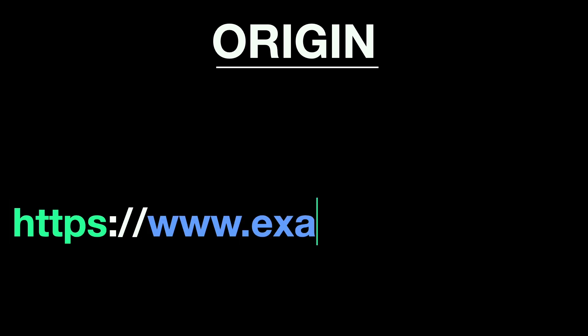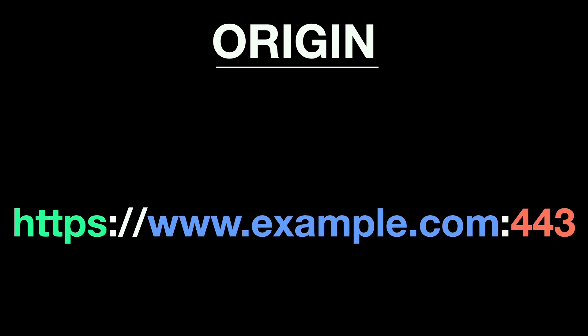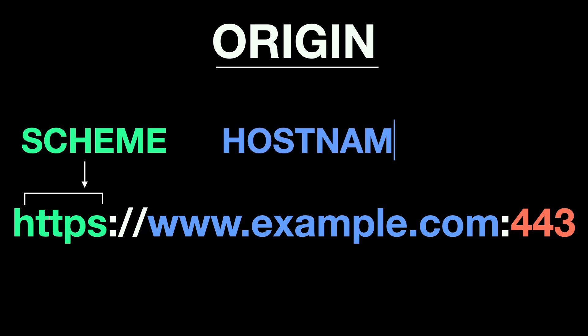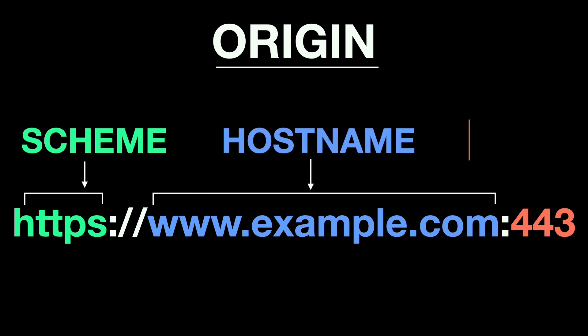First, let's understand the term origin. An origin is made up of three parts: the scheme, the hostname, and the port. For example, in a URL, the scheme is HTTPS, the hostname is www.example.com, and the port is 443. Altogether, they form the origin.